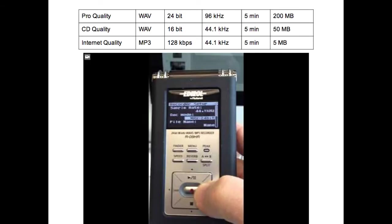So, what type of audio files and settings should you choose? For CD quality, choose WAV at 16-bit, 44.1 kHz, where 5 minutes will equal about 50 MB of information. If you're looking for professional quality, choose WAV at 24-bit, 96 kHz, where 5 minutes will equal 200 MB.